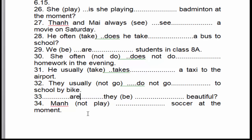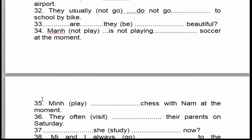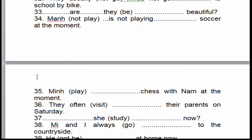Câu số 34: 'Manh is not playing soccer at the moment.' Bạn Mạnh không chơi bóng đá vào lúc này. 'At the moment' là dấu hiệu nhận biết của thì hiện tại tiếp diễn, thể phủ định, vì có chữ 'not'. 'Manh' là chủ ngữ số ít, cho nên chúng ta sử dụng to be 'is not playing'. Câu số 35: 'Minh is playing chess with Nam at the moment.' 'At the moment' — thì hiện tại tiếp diễn. 'Minh' là chủ ngữ số ít, cho nên chúng ta sử dụng to be 'is' → 'is playing'.